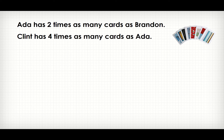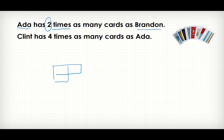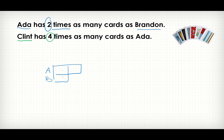I'm going to give you part of the question, because this part is enough to draw a model. Ada has two times as many as Brendan, so I want to underline Ada and Brendan. Let's draw a model for Ada and Brendan. I've drawn two units and one unit. Ada has two times as many as Brendan — make sure you label, that's called drawing a model. Now let's use a different color. Clint has four times as many cards as Ada.